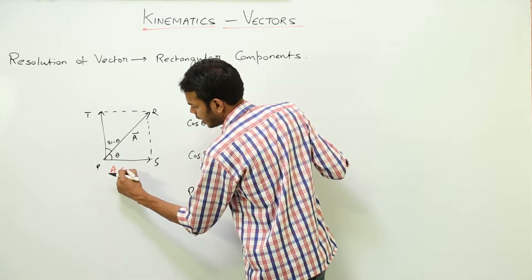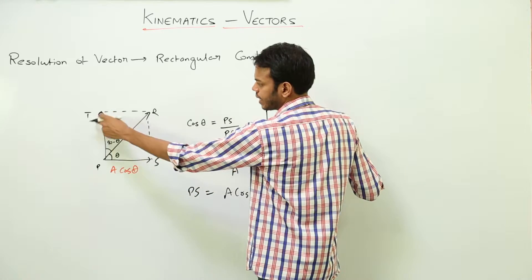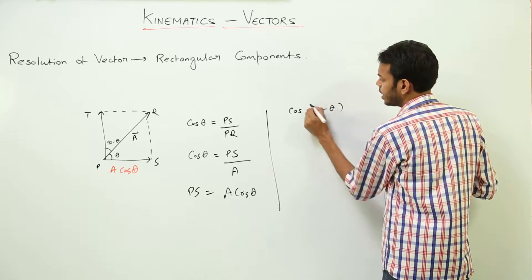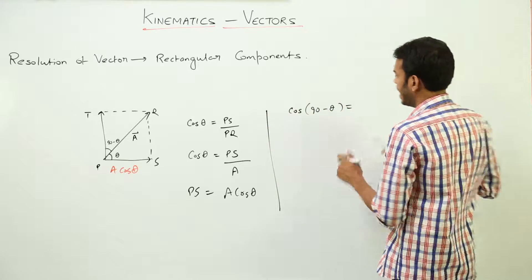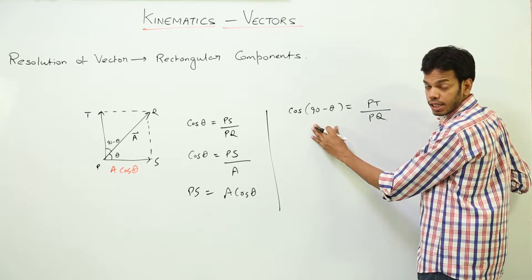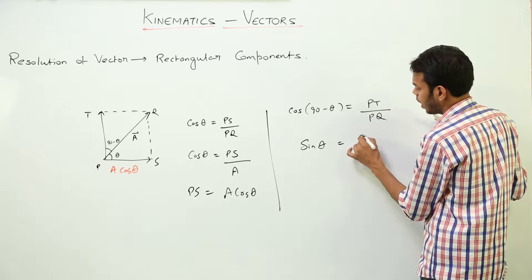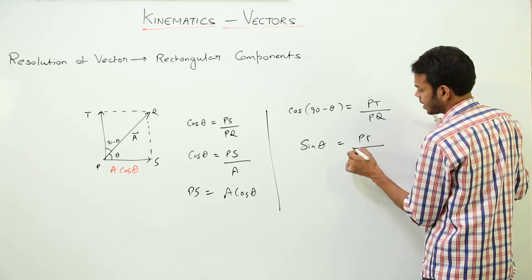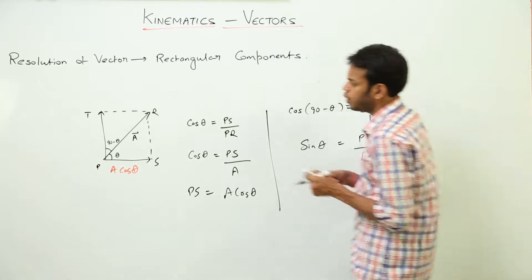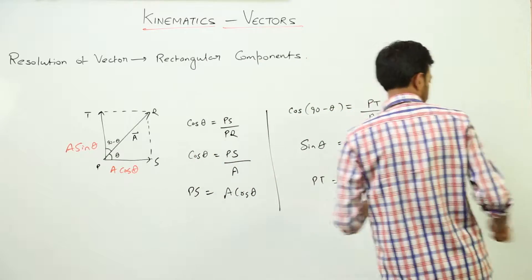So this vector is A·cos(theta). Similarly, using cos(90°−theta) for the other component: cos(90°−theta) equals base PT over hypotenuse PQ. By trigonometric identity, cos(90°−theta) equals sin(theta), so sin(theta) equals PT over PQ, and since PQ is the magnitude of vector A, PT becomes A·sin(theta). So this vector is A·sin(theta).